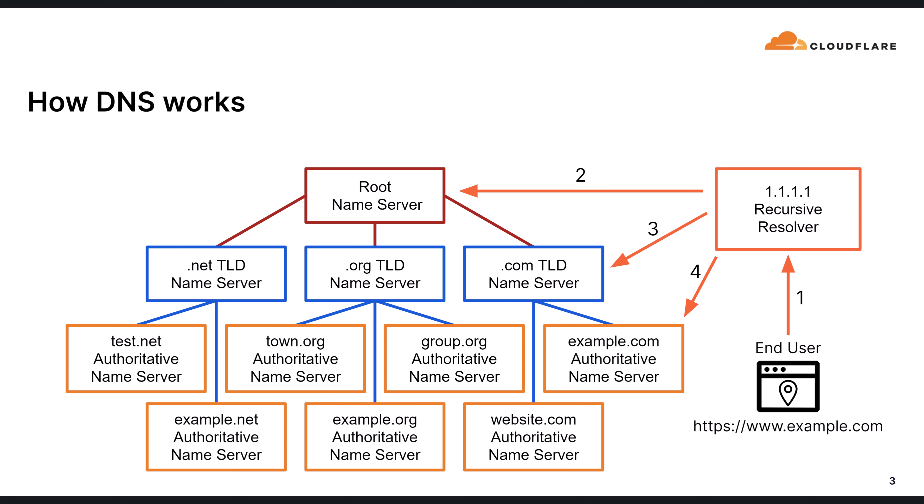Once the DNS resolver receives a query, it essentially reads the address backwards, starting with the TLD. In this case, com is the TLD. The DNS resolver uses a root name server to find which name servers are authoritative for the com TLD. There are only 13 root name servers on the entire internet. The root name server returns NS records for the com domain, and the resolver queries one of those for example.com, which returns NS records for example.com — the authoritative name servers. Finally, the resolver queries for www.example.com and receives an A record with an IP address.